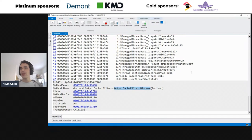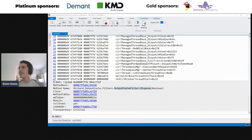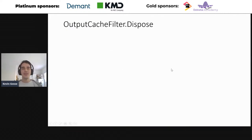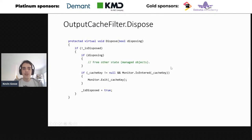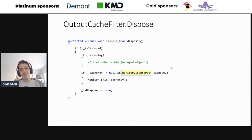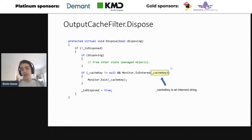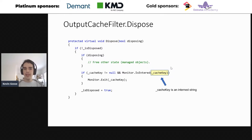I have a simplified version of the code. This is a basic implementation of the dispose pattern. The important part is that we're calling Monitor.IsEntered, whose name reminds me a lot of ObjectNative::IsLockHeld. We're also locking on an interned string. Locking on an interned string is a bad practice but not necessarily wrong if done right. I decided to dig into Monitor.IsEntered to see if it's related to IsLockHeld.